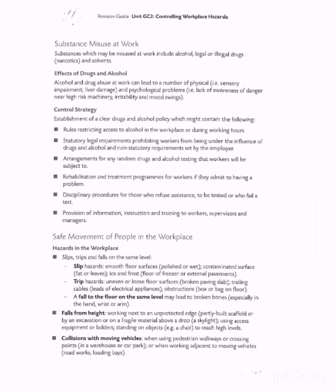We're talking about collisions with moving vehicles. This can occur when using a pedestrian walkway — that is where people use the footpath, also called crossing points — or when walking adjacent to roads or loading bays. To prevent accidents, instead of a human being colliding with a vehicle, a separate way should be made: a human being will use one way and a vehicle should use another.